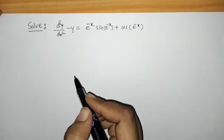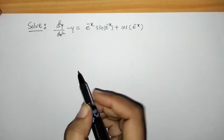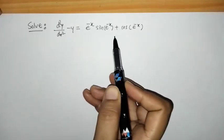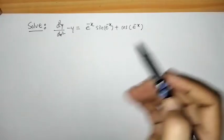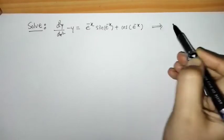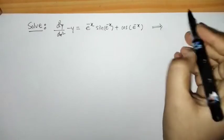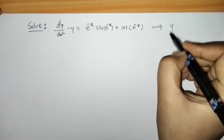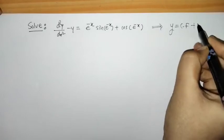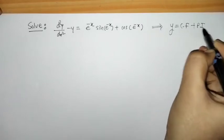Hello everyone, welcome to Unlock Maths. Today we have to solve this differential equation, that means here we have to find y equals CF plus PI.